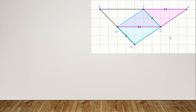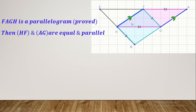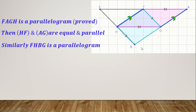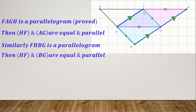In geometry, we cannot move to the next part without using prior conclusions. We proved that FAGH is a parallelogram, so the other pair of opposite sides AG and HF are also equal and parallel. Now for segment BG: HFGB is also a parallelogram, since FG and HB are equal and parallel — proved in part A. Therefore in parallelogram HFGB, the other pair of opposite sides BG and HF are equal and parallel. So BG and GA are both equal and parallel to HF.